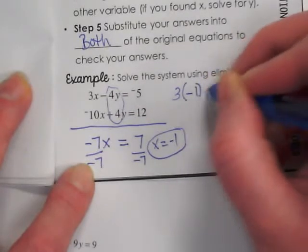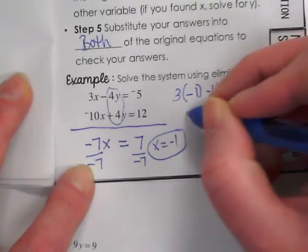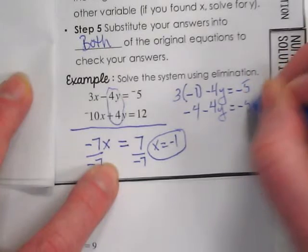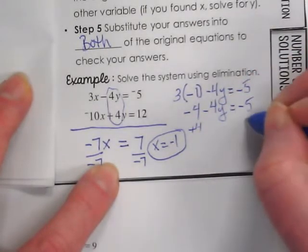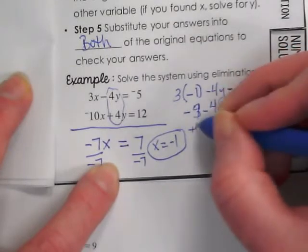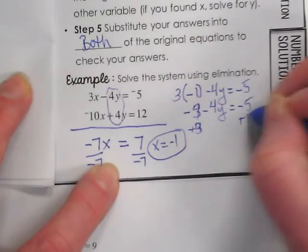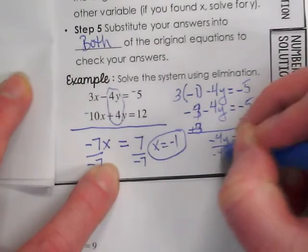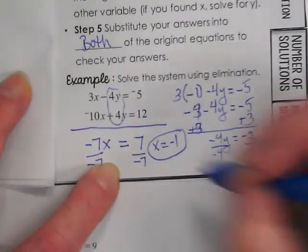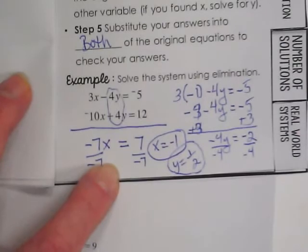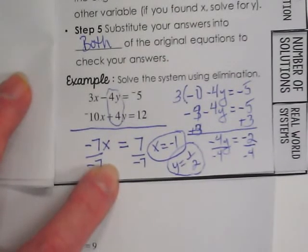Three times negative 1 minus 4y equals negative 5. Oh, I made that a 3. I mean, a 4. Is it 1 over 2? Yep. We got the same answer. Did you use a different equation for me? Yes. And I told you we'd get the same answer. So our x-y pair is negative 1, 1 half.